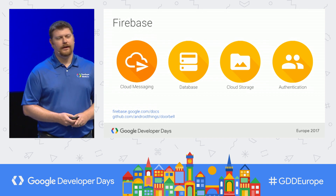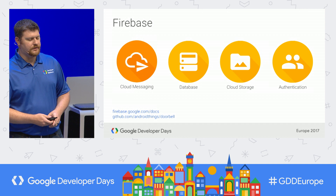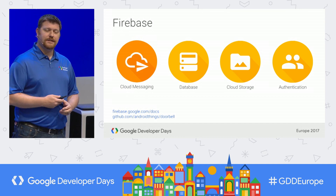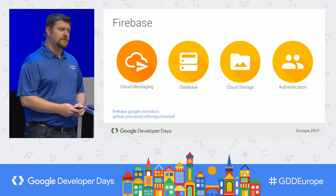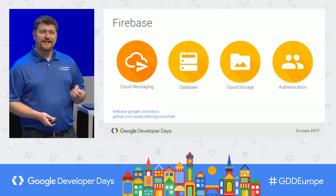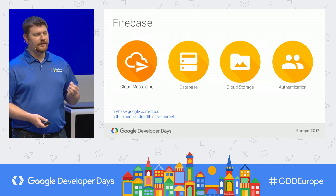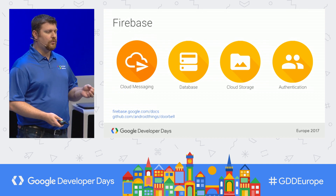Firebase also has an amazing suite of applications and services that are useful for IoT. The real-time database makes it easy to synchronize the state of various devices across a mobile app and between various IoT devices. Authentication enables you to associate devices with the user's account. And with Android Things, all of these features are even easier to integrate for IoT because you can use the same existing Android client libraries and SDKs right on those devices.